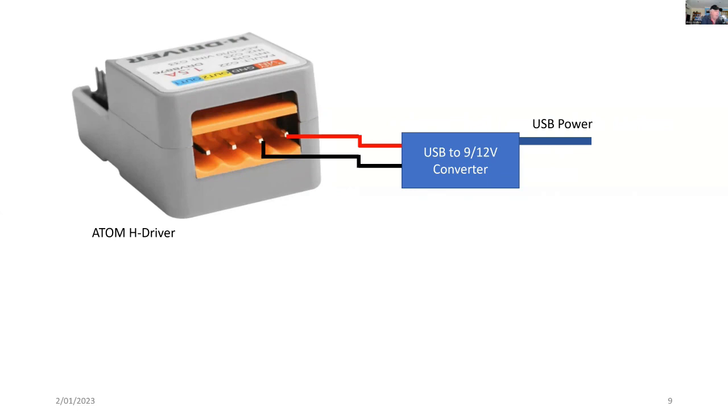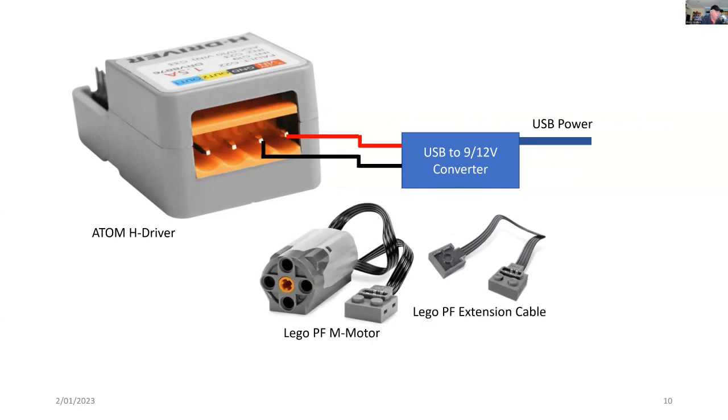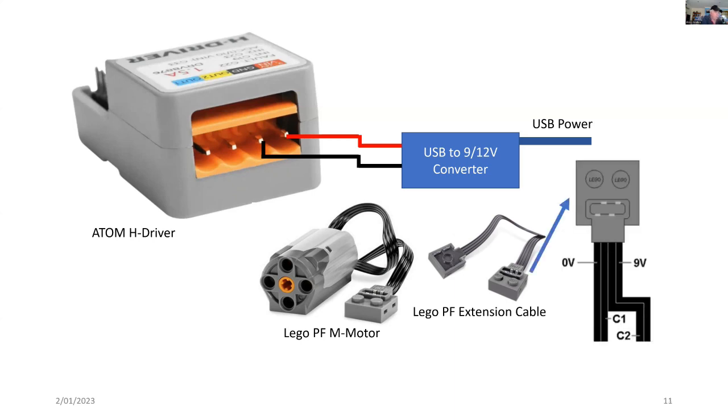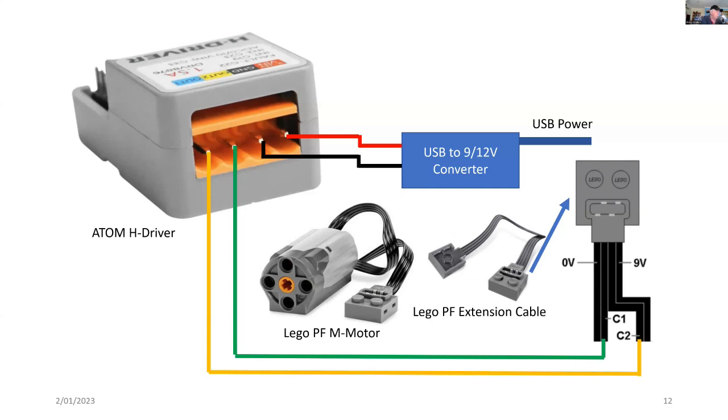I've got a 9-volt power supply, which is coming from a USB 9 to 12-volt converter. I'm going to use the Lego power function, and I'm going to connect the Lego header on that with an extension cable, but I'm going to cut the extension cable and take the inner two wires to the Atom H drive. We need to know what the function is of each of those wires. The outer ones provide the power, and the inner ones can provide the motor drive voltage. All we do is just connect C1 and C2 to the pins on the Atom H driver.